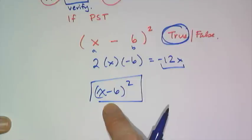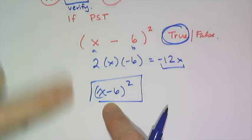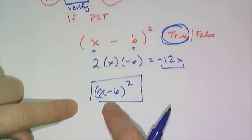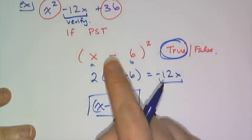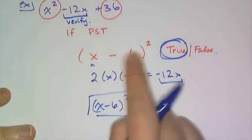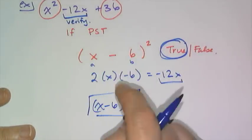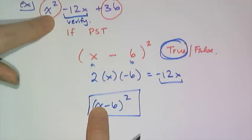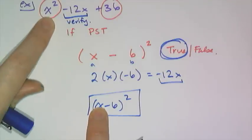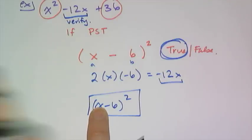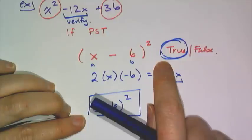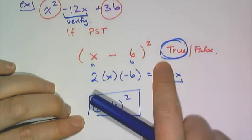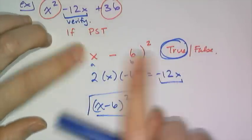You can check this by typing the original as y1 and the factored form as y2 in your calculator and making sure the tables are identical. But honestly, multiplying 2 times the two square roots is faster than entering equations into the calculator, so it's easier to check these by hand. You always have to verify that it is indeed a perfect square trinomial.